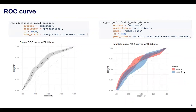With the ROC plot or ROC plot multi-function and the code shown here, users can draw a traditional ROC curve with 95% confidence interval ribbon for single or multiple models.